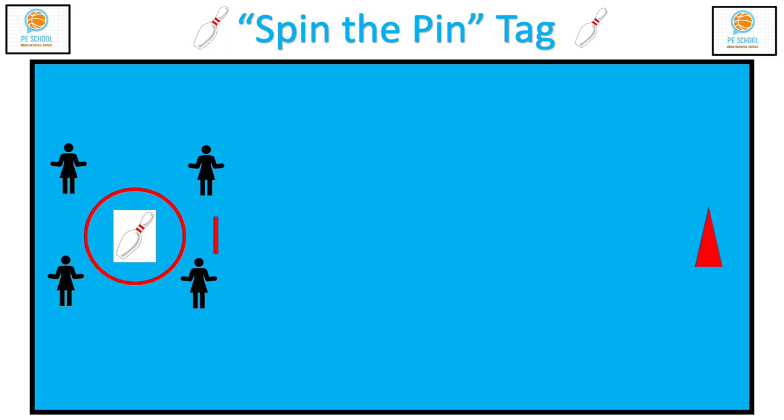When the game begins, one student reaches down and spins the bowling pin inside their hula hoop. As the bowling pin is spinning, you may choose to have students perform exercises such as jumping jacks or burpees, but it is not necessary.